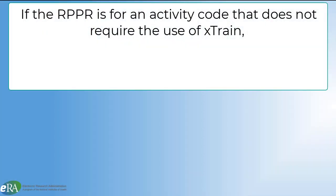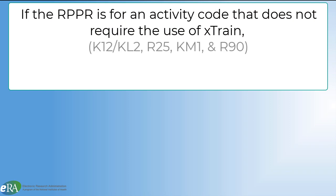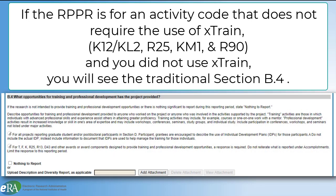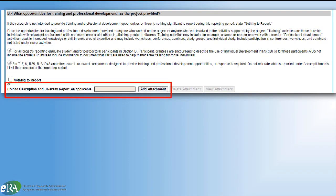If you are completing an RPPR for one of the other activity codes where Xtrain can be used but is not required — as a reminder, those would be K12, KL2, R25, KM1, and R90 — and you did not use Xtrain, you will see the traditional B4 section. Here you will upload the traditional Trainee Diversity Report PDF, along with the descriptions of the training and professional development opportunities supported by the project.